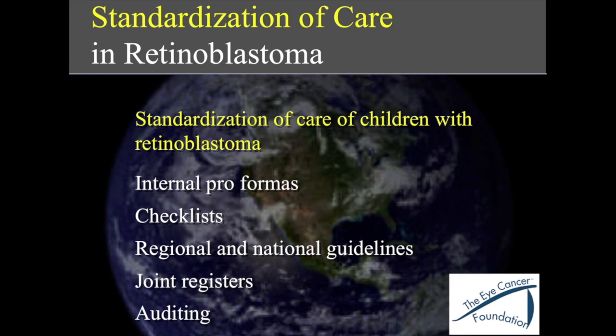Then you can do auditing, which is very useful if you have more than one center treating retinoblastoma — it can be done informally and doesn't need to be a government audit. In the UK, three centers treat retinoblastoma and they do self-audits. They can send people to another center to audit their procedure and give advice on areas that might be improved, based on the experience of the center sending the auditor. I'm sure you can find other ways of standardizing your procedures as well. This was the long and short of this topic that Brenda gave me, which made me think about it more than I had before. Thank you.